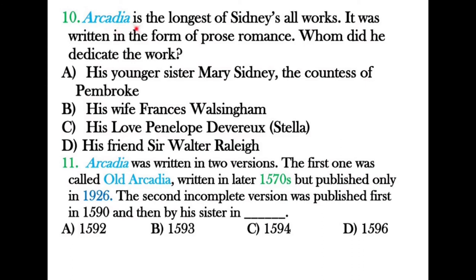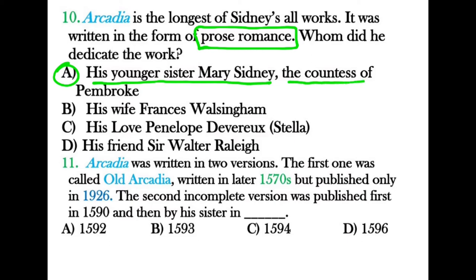Question ten: Arcadia is the longest of Sidney's works. It was written in the form of prose romance — also called pastoral romance. Whom did he dedicate the work to? The answer is his younger sister, Mary Sidney, the Countess of Pembroke. The published name for this work was Countess Pembroke's Arcadia.